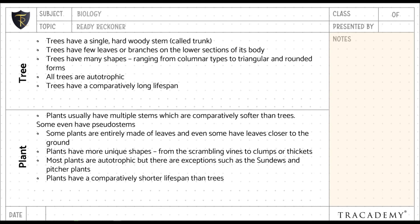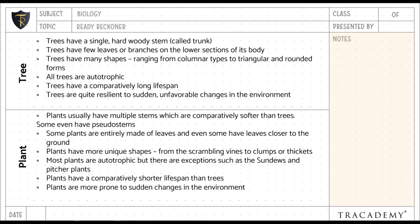Trees have a comparatively long lifespan, whereas plants have a comparatively shorter lifespan. Trees are quite resilient to sudden unfavorable changes in the environment, whereas plants are more prone to such changes. Trees are considered perennials, whereas plants are more usually biennials and annuals.